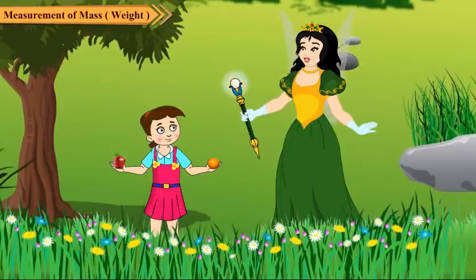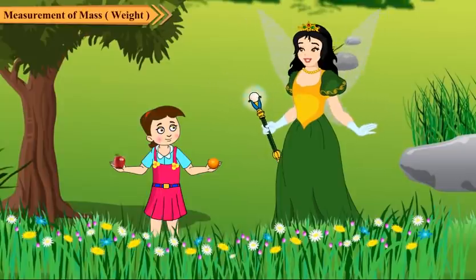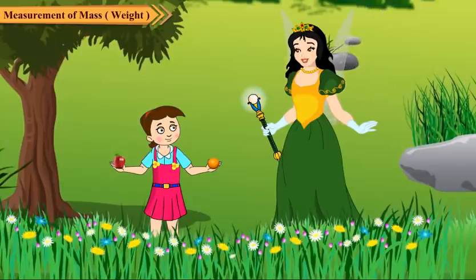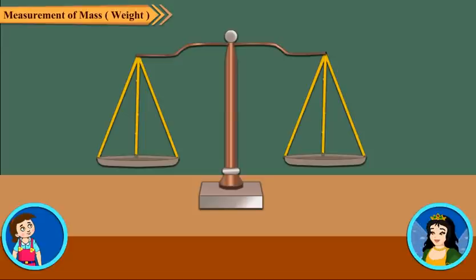To know whether an object is heavier or lighter than the other, we use a beam balance. It has two pans. When nothing is put on the pans, these remain at the same level.